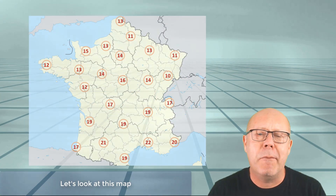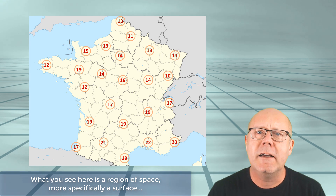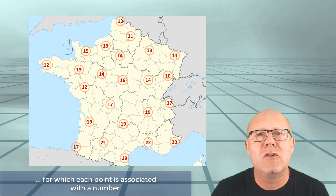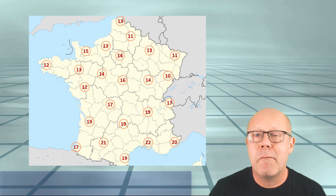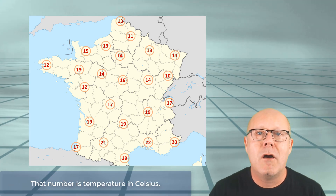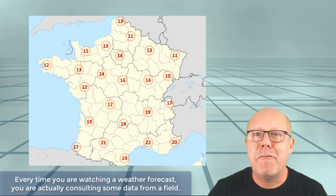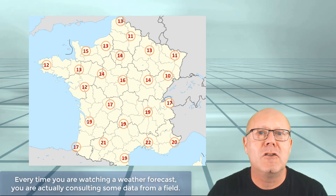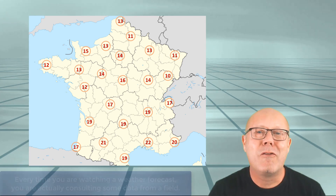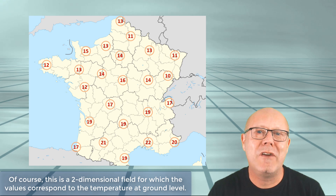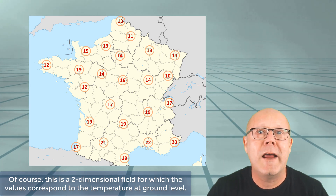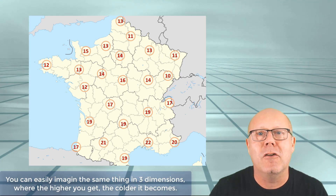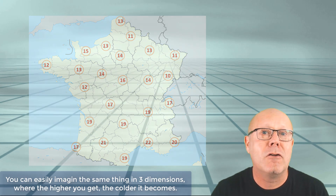Let's look at this map. What you see here is a region of space, more specifically a surface, for which each point is associated with a number. That number is temperature in Celsius. What we are seeing here is a temperature field. Every time you are watching a weather forecast, you are actually consulting some data from a field. Of course, this is a two-dimensional field, for which the values correspond to the temperature at ground level. You can easily imagine the same thing in three dimensions, where the higher you get, the colder it becomes.